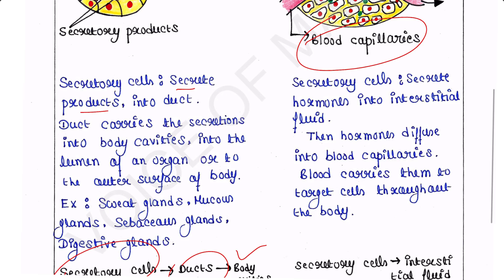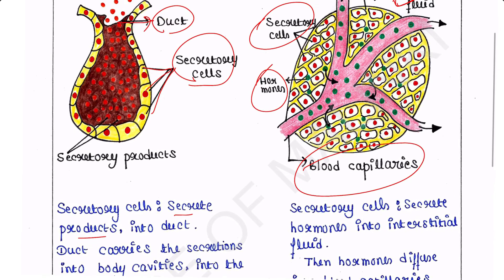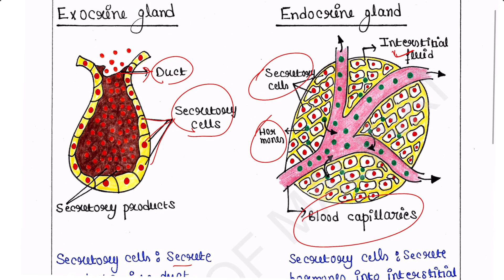So we can see that endocrine glands are ductless glands, whereas exocrine glands have ducts.